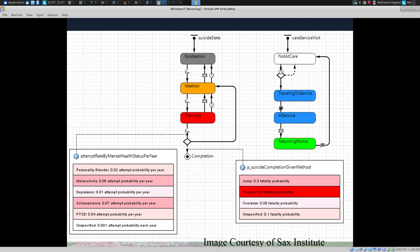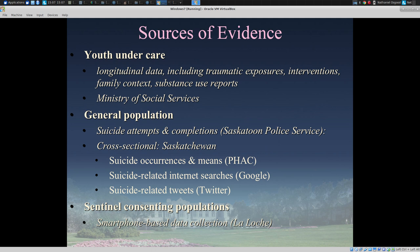This work is involved quite a lot with the SACS Institute overseas but includes increasingly strong modeling work drawing on the SACS work together with our partners at the Public Health Agency of Canada. Sources of evidence we're drawing on or plan to draw on include data related to longitudinal progression of individuals including traumatic exposures, interventions, family context, and data from the Ministry of Social Services. For the general population, we're drawing on data from PHAC and large-scale online sources such as Google and Twitter, and anticipating data from the police service in coming months.